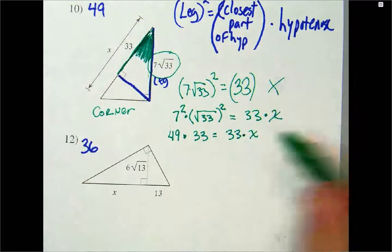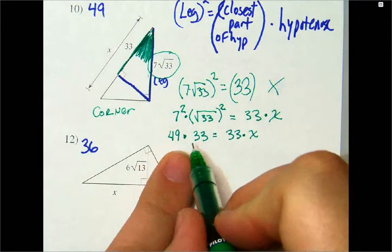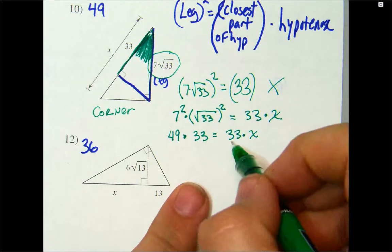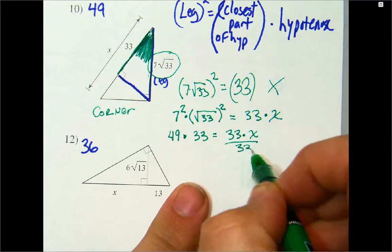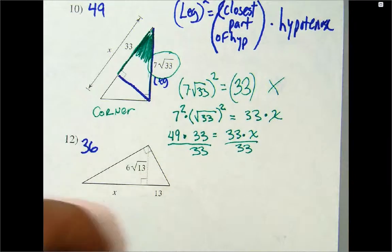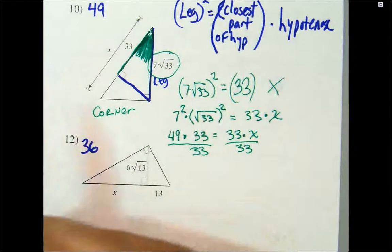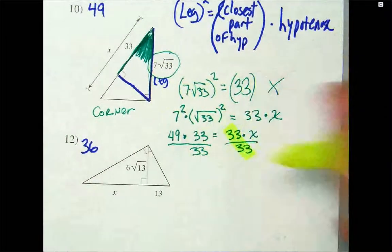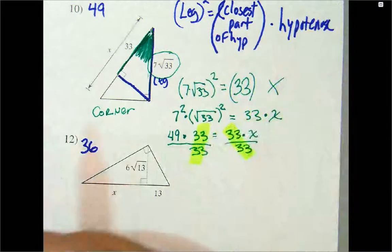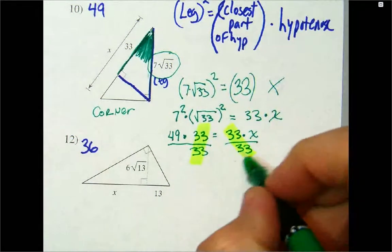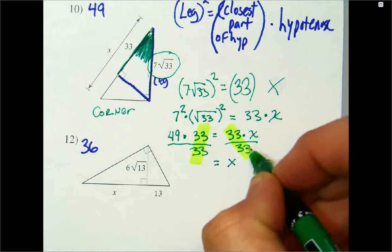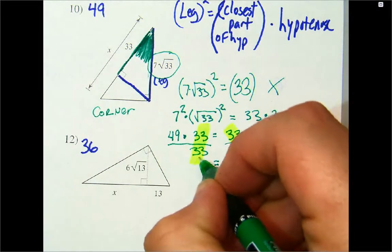Now, I'm not going to multiply this out because I see I have a 33 here. I got a 33 over here. Divide by 33. Divide by 33. Those two divide out. I'm left with 1. These two divide out. I'm left with 1 there. So, what I'm left with is X here and 49 over here.